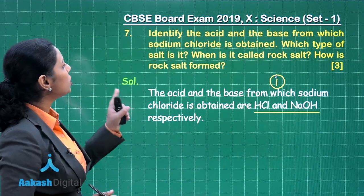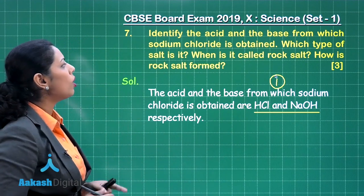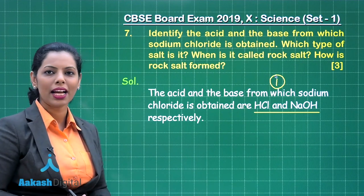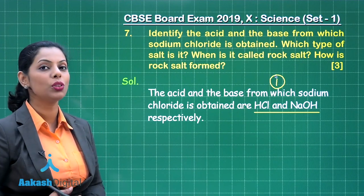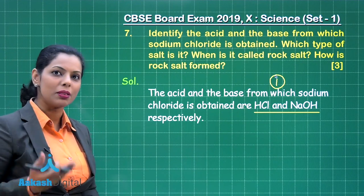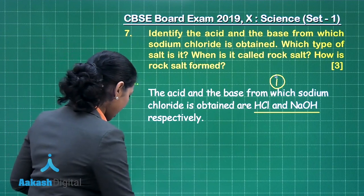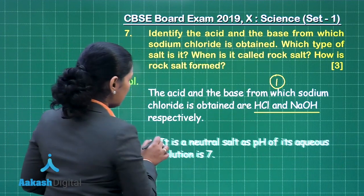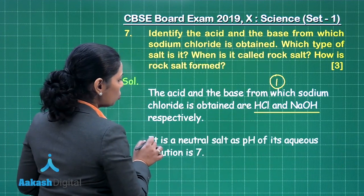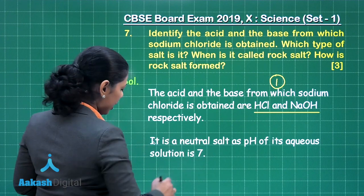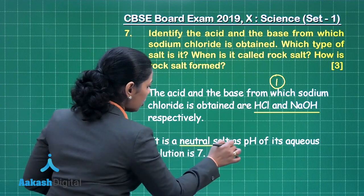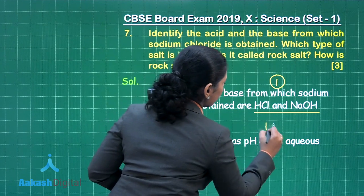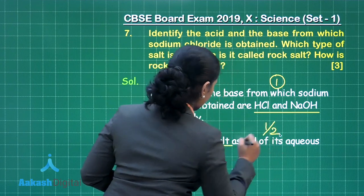The second part asks which type of salt it is. It is a neutral salt because its pH is 7. Simply write that it is a neutral salt and you will get half mark here.